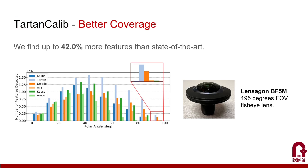We test our methodology using a 195-degree field-of-view fisheye lens. This figure compares Tartan Calib against state-of-the-art detectors, visualized in spherical coordinates. Our methodology yields significantly better coverage, with up to 42% more features detected, especially at the edge of the lens.